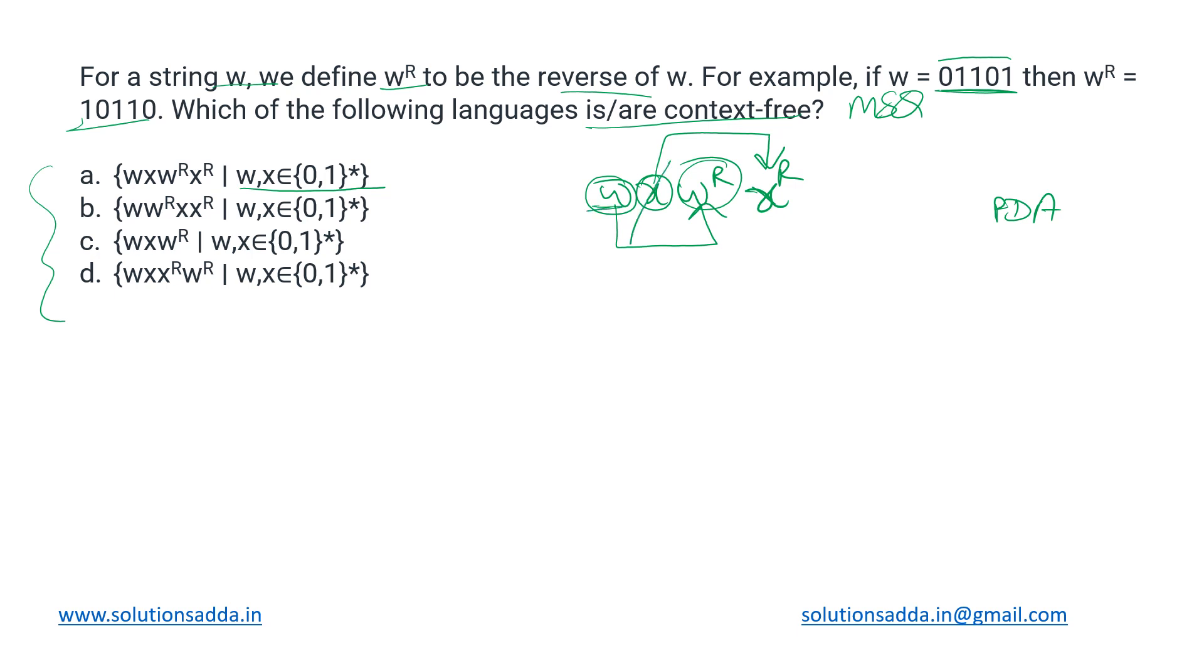If we simply ignore this x and don't push it to the stack, then we can accept w and w^r. But now when this reverse of x comes, by that time the stack would be empty because we would already have popped w^r against w, and we did not push x in the first place. So when we reach here, the stack would be empty, so there is no way to compare x and x^r. We can accept either simply w and w^r or simply x and x^r, but both at the same time is not possible using a PDA. So this language will not be context-free. This one is rejected.